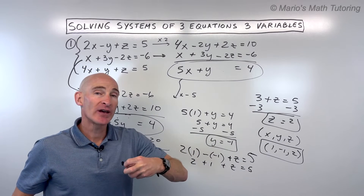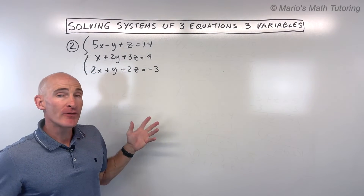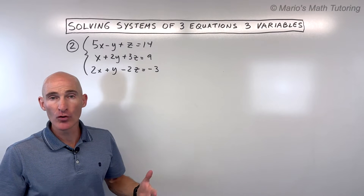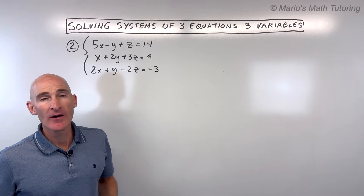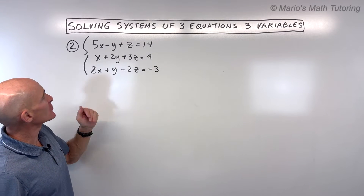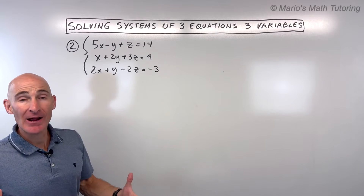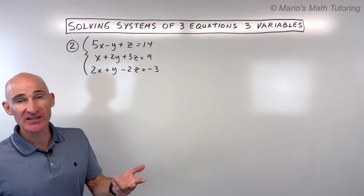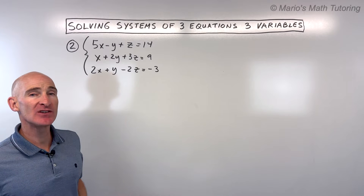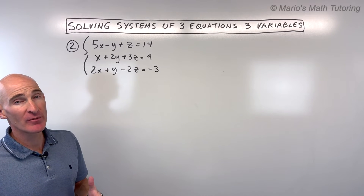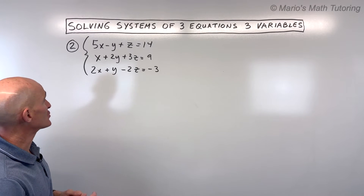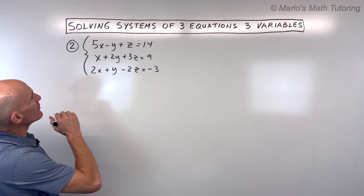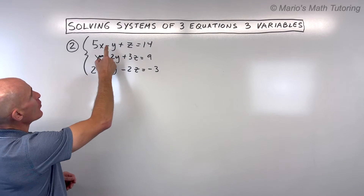So let's take a look at another example. If you're getting the hang of this, why don't you try this second example and we'll go over it together. For number two, we've got these three equations. You need to decide what variable you want to eliminate first — either the x's, the y's, or the z's. Sometimes one's easier than another, but you can't really make a mistake by which variable you pick — it's just a convenience.